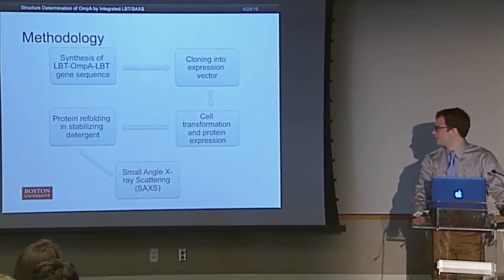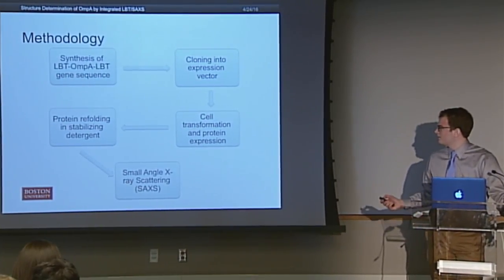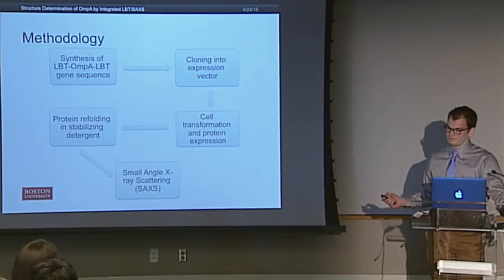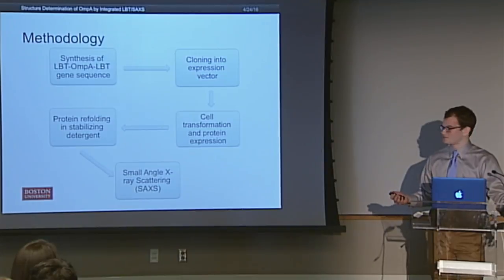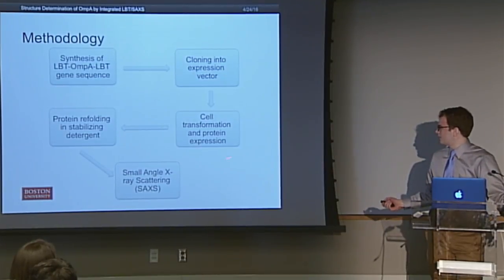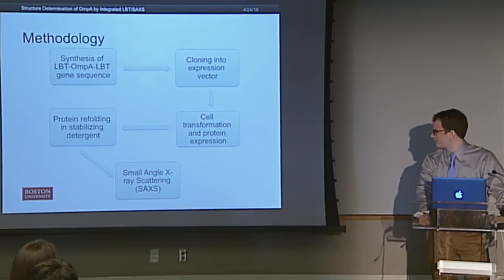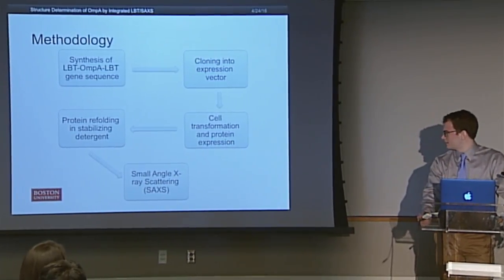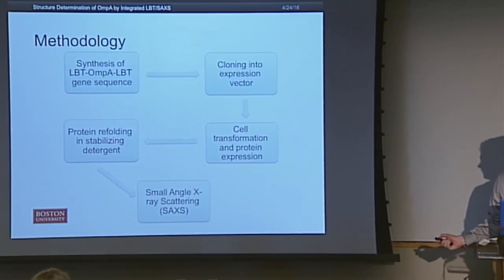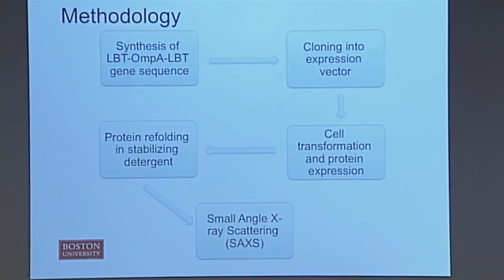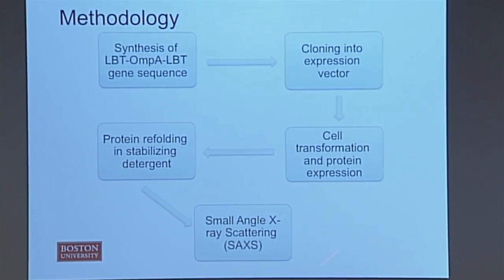My general methodology was: first, synthesize a DNA sequence coding for the LBT-modified outer membrane protein A; clone it into a form that a cellular system can recognize and produce; introduce that into a cell to have the cell produce this protein; purify and refold it into the biologically relevant form I want to study; and then — and only then — perform the small-angle X-ray scattering experiment.